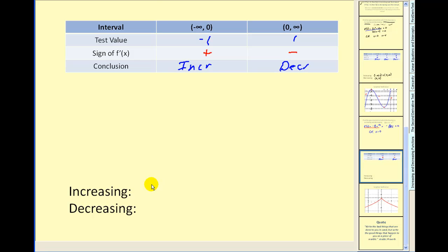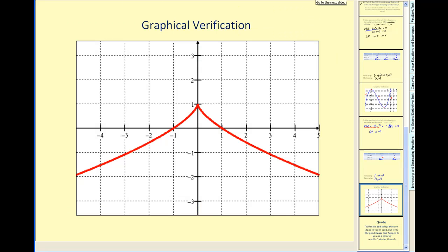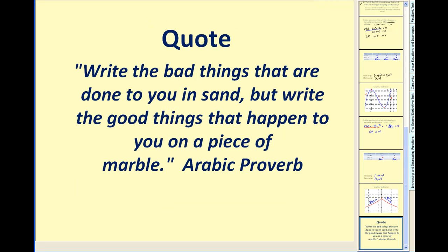To summarize and verify with the graph: to the left of zero the function is increasing, and to the right it is decreasing. I hope that helps explain how you can use the first derivative to determine where a function is increasing or decreasing. Thank you for watching.